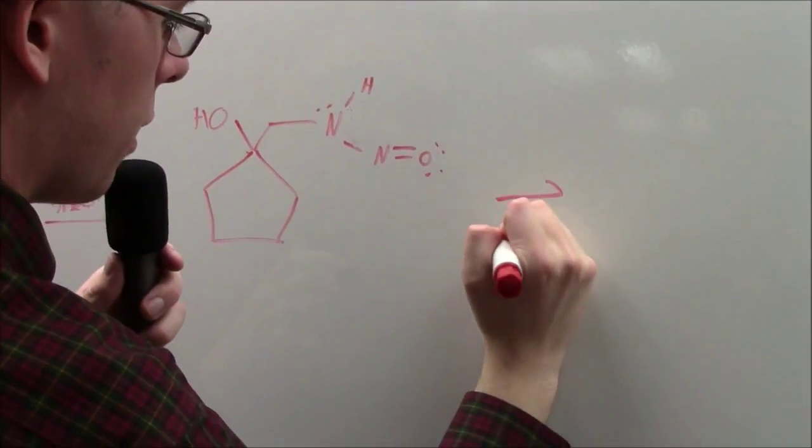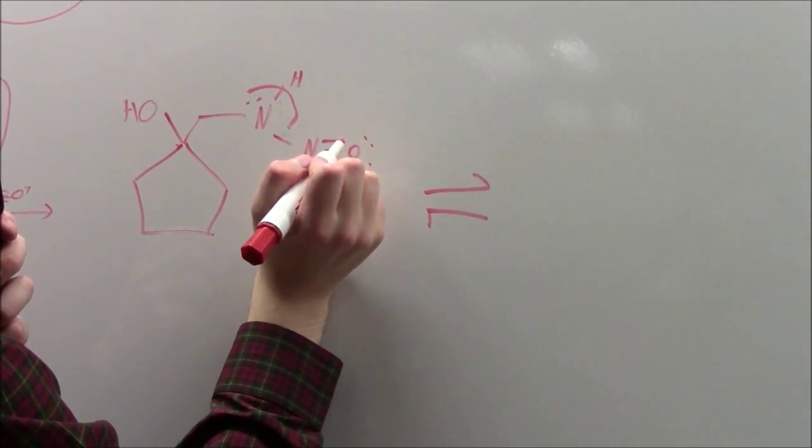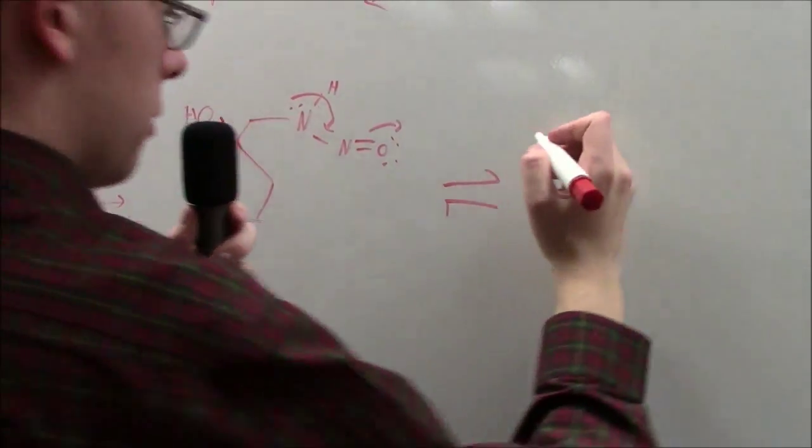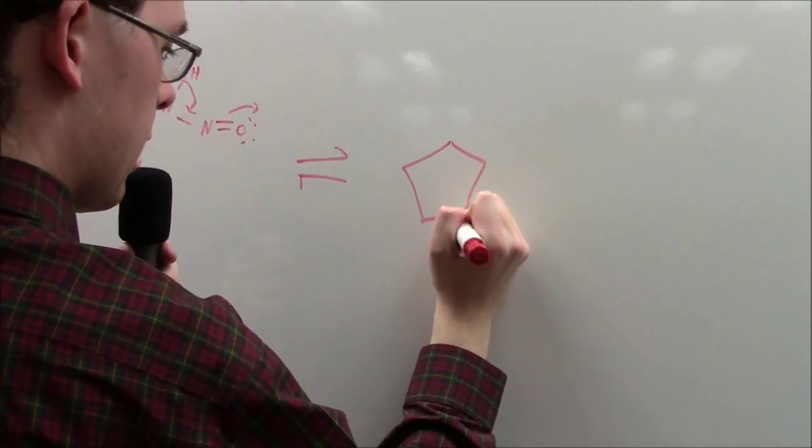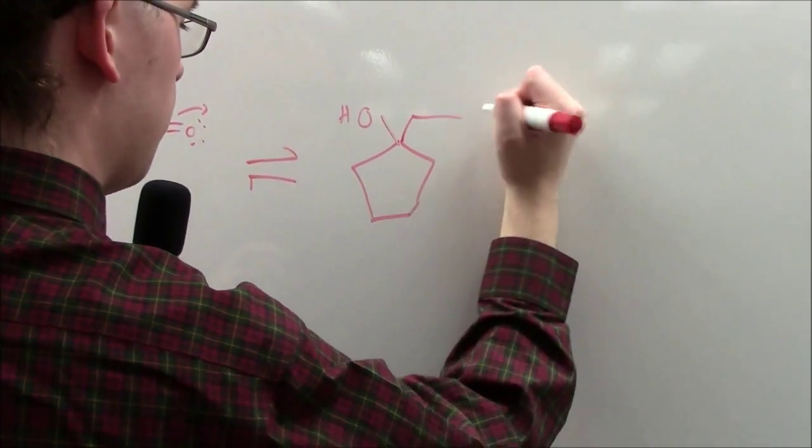This can spontaneously rearrange to form closer to the diazonium ion needed and the hydrogen group intact.